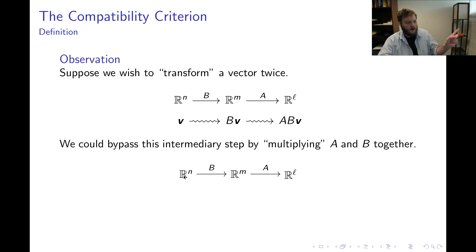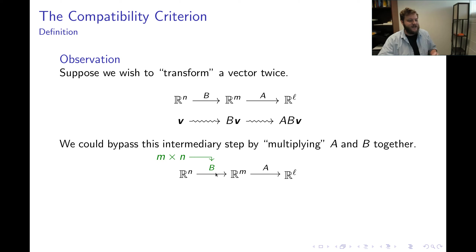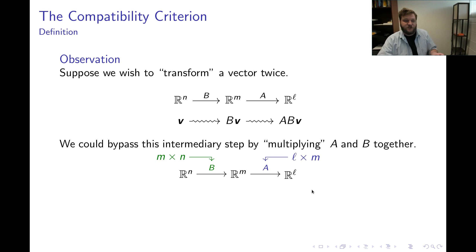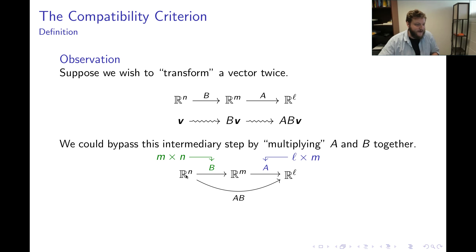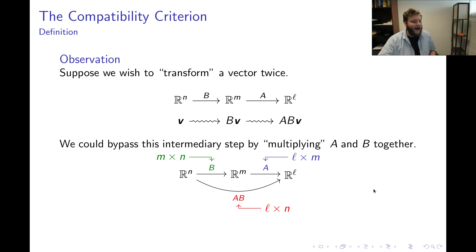B needs to go from Rn to Rm, and A needs to go from Rm to Rl. That's the same as saying B needs to be an M by N matrix and A needs to be an L by M matrix. If I multiply these two matrices together, the purpose is to construct a machine that takes vectors in Rn and produces vectors in Rl — meaning A times B must be L by N. That's the context for setting all of this up.